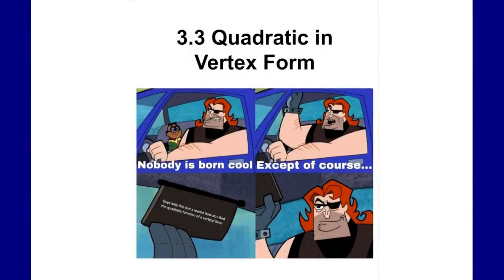In today's lesson we are going to be looking at the quadratic in vertex form. In a previous lesson you looked at an investigation examining the different forms of the quadratic in vertex form, looking at the different variables and how they affect the shape of our parabola. This is going to be a summary of that investigation, and we're going to look at some of the characteristics of the vertex form.